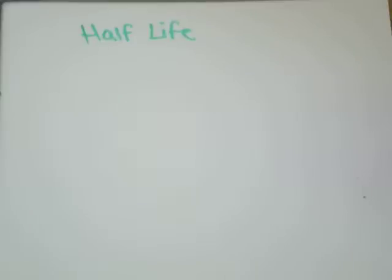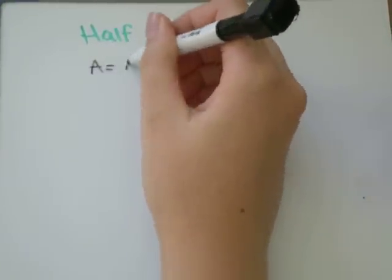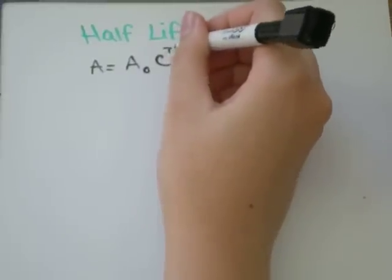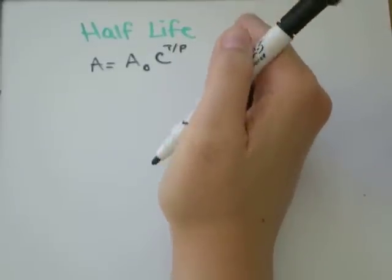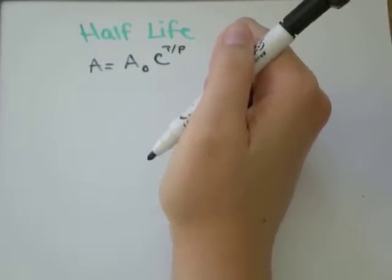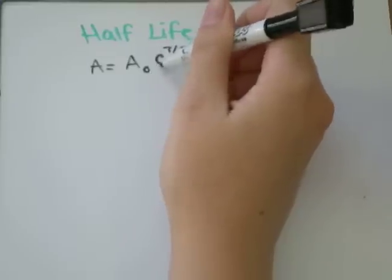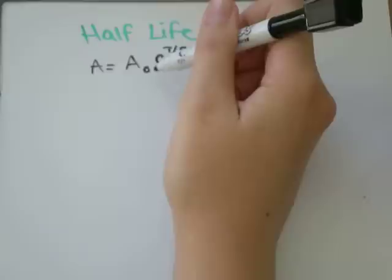So the formula we use for half-life is A equals A naught C to the exponent of t over p. A is equal to the amount of substance that's left over. A naught is the amount you start with. C is a number, so it would be a half for half-life.